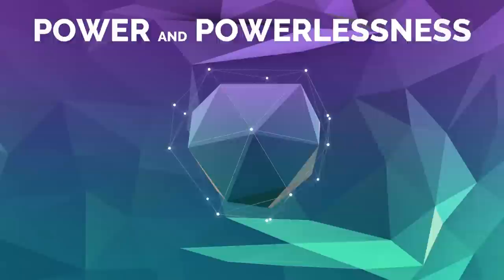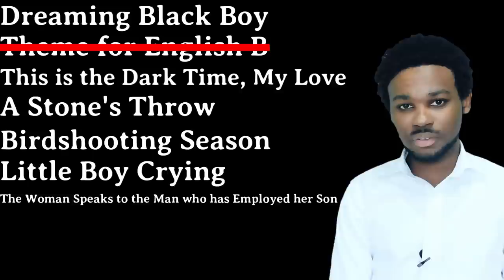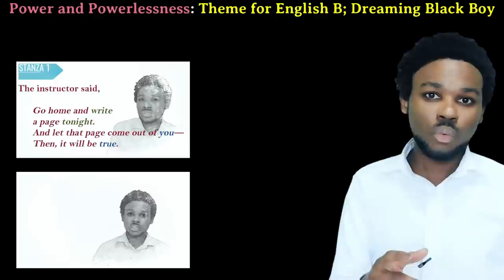Theme 6: Power and Powerlessness. The poems are Dreaming Black Boy, Theme for English B, This is the Dark Time My Love, A Stone's Throw, Bird Shooting Season, Little Boy Crying, and The Woman Speaks to the Man Who Has Employed Her Son. In several of the poems, we see how personae are powerless — they are helpless, they can't change their situation. They're stuck. We also see how others have power over them.